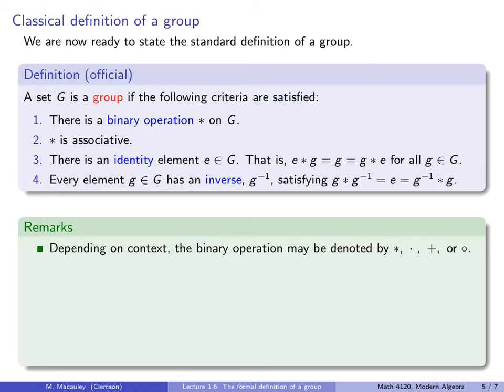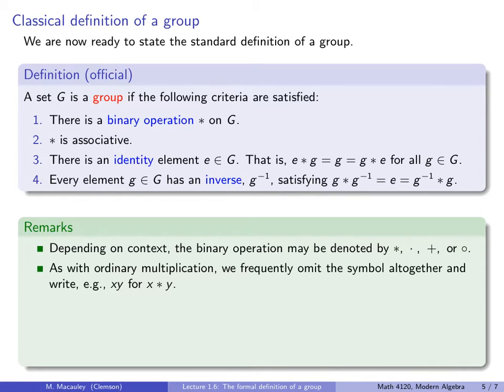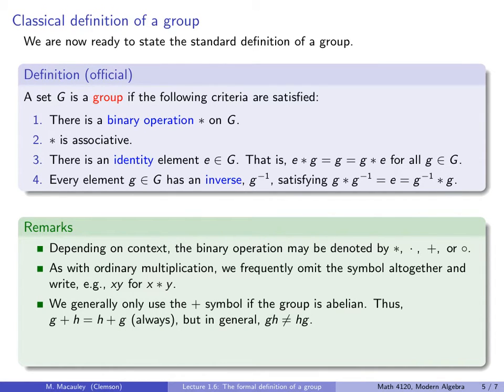Now, a few remarks. Depending on the context, the binary operation may be denoted like star or a dot as in multiplication, or maybe addition. Sometimes we can have groups of numbers that we are adding together. Or even a circle, especially if we're dealing with functions, and the operation is function composition. As with ordinary multiplication, we frequently omit the symbol altogether, and we will write something like x, y for x star y. But we only do that, typically, if our operation is actually multiplication. It wouldn't make sense to do this if we were talking about adding x and y together. Speaking of addition, we generally only use the plus symbol if the group is abelian. So G plus H always equals H plus G, but in general, G times H does not equal H times G. If you want to remember this, think about matrices. Adding matrices, the order does not matter. Multiplying matrices, it absolutely does. Finally,